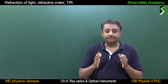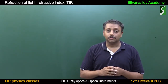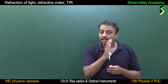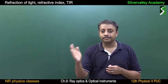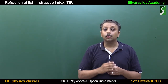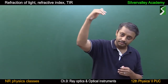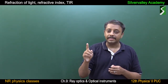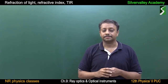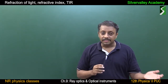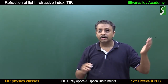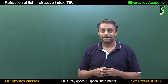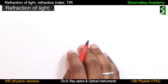After refraction of light, we will go through normal shift, lateral shift, total internal reflection (TIR), early sunrise, and delayed sunset due to refraction of light.